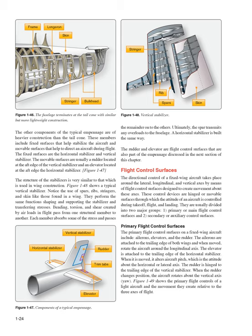The directional control of a fixed-wing aircraft takes place around the lateral, longitudinal, and vertical axes by means of flight control surfaces designed to create movement about these axes. These control devices are hinged or movable surfaces through which the attitude of an aircraft is controlled during takeoff, flight, and landing. They are usually divided into two major groups: primary or main flight control surfaces, and secondary or auxiliary control surfaces. The primary flight control surfaces on a fixed-wing aircraft include ailerons, elevators, and the rudder.